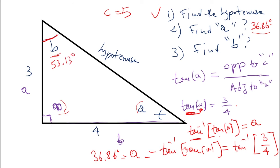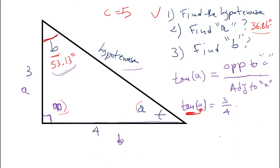To verify, we check using sine. The sine of 53.13 degrees should equal the opposite over hypotenuse, which is 4 over 5. If it matches, our answer is correct; if not, we go back and find the mistake.